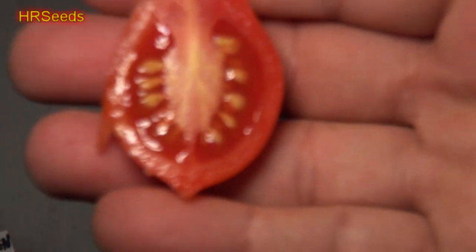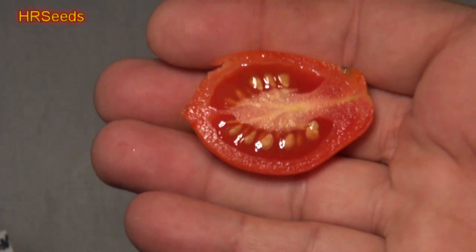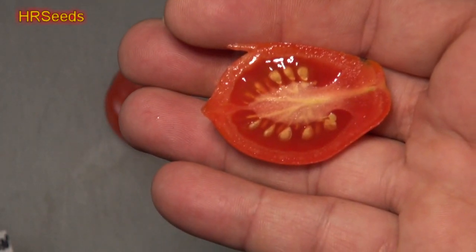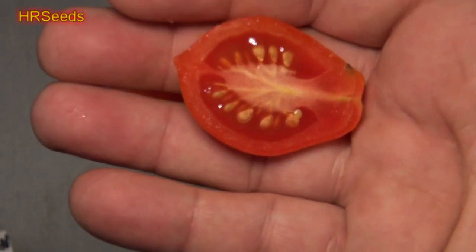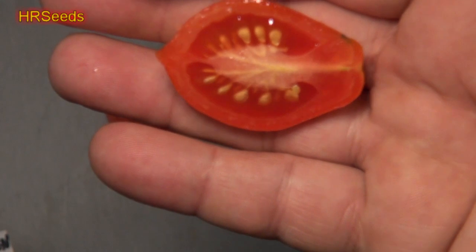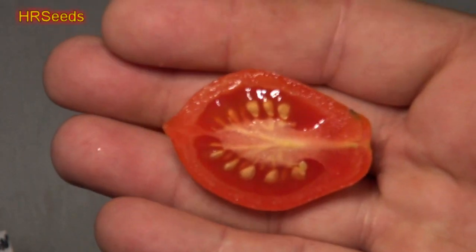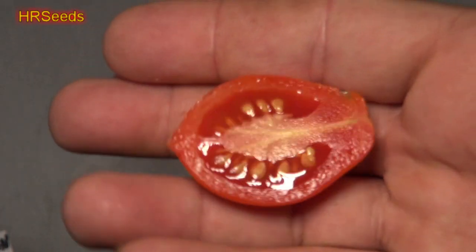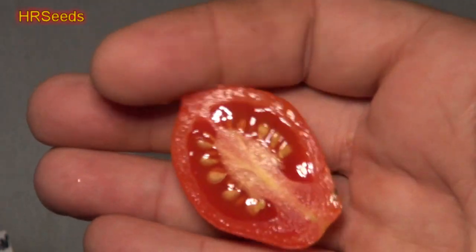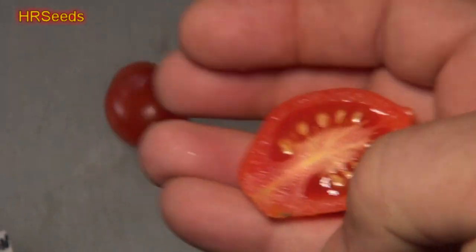I cut it perpendicular to the rib and you can definitely see that's a gorgeous looking tomato on the inside. It's just really fascinating. Look at that, isn't that nice? Very, very nice. I'll show you the other one.